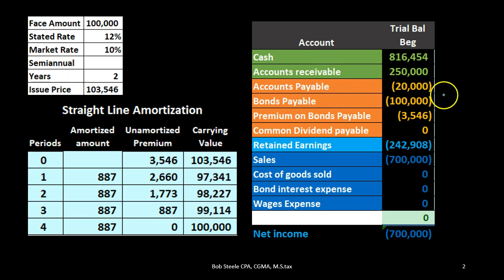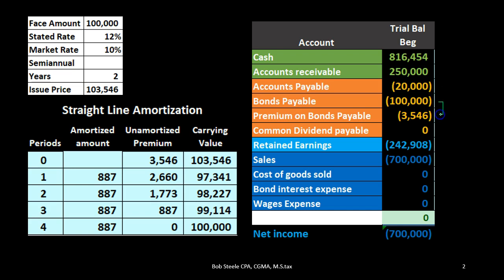Looking at the trial balance to understand how we record this: we put the bond on the books as a liability — bonds payable $100,000 — and we record the premium on the books at $3,546. We received cash of $103,546. The carrying amount at this point, adding those two credits together, is $103,546.